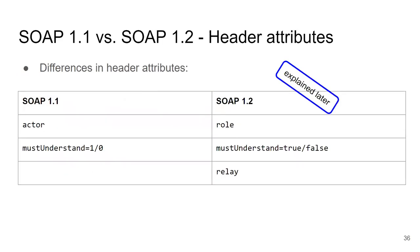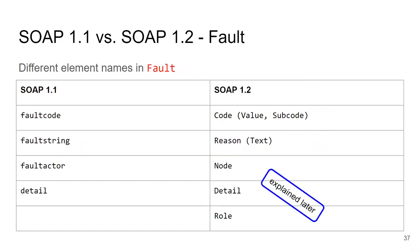There are also differences in element names — for example, the MustUnderstand attribute is 1 or 0 in SOAP 1.1 and true/false in SOAP 1.2. For faults, SOAP 1.2 uses Code and Reason elements, while SOAP 1.1 uses faultcode and faultstring. These are the same concepts with different names. You can try these differences yourself in the tutorial.